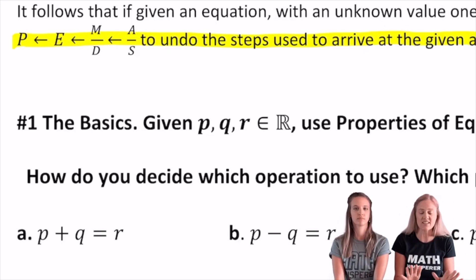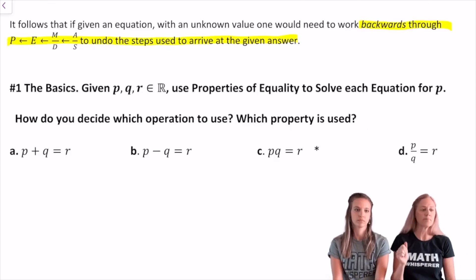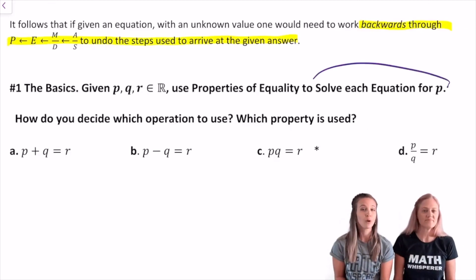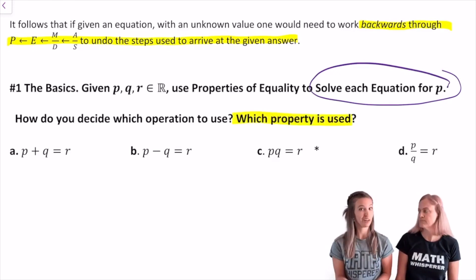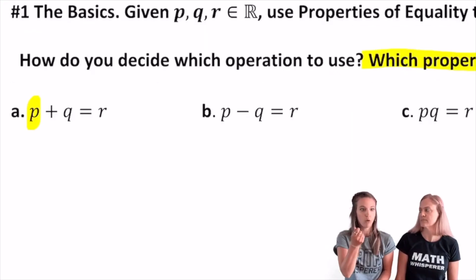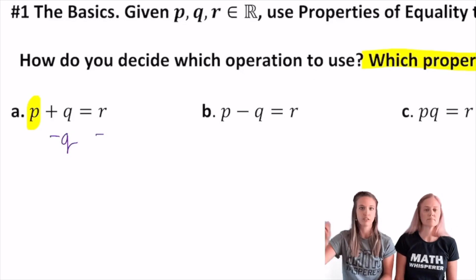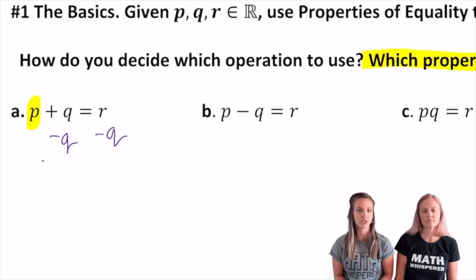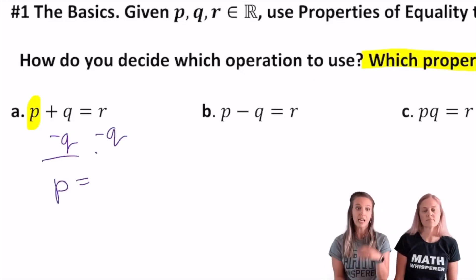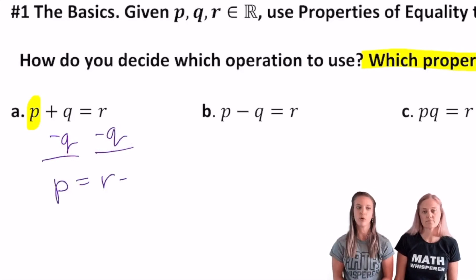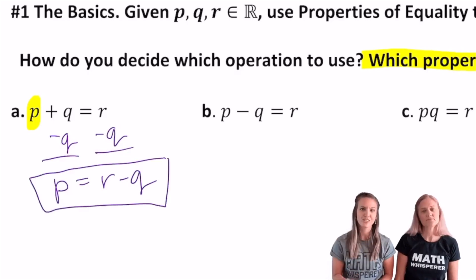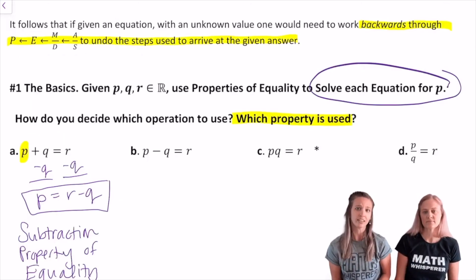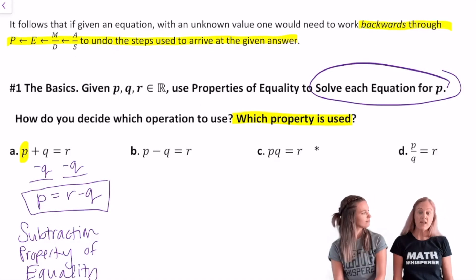Let's look at the first one. We want to solve for p: p plus q equals r. To get p by itself, I need to get rid of q. Since q is being added, I'm going to subtract it from both sides — whatever I do to one side, I do to the other. That leaves me with p equals r minus q. There I used the subtraction property of equality.